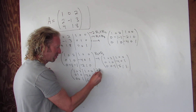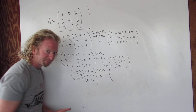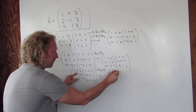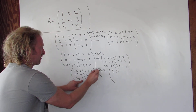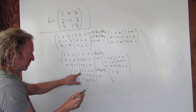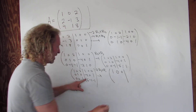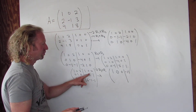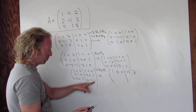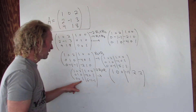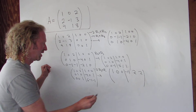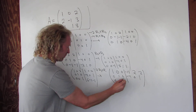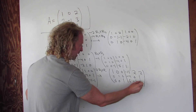We do negative 2 times row 3 plus row 1. Row 1 changes: 0 plus 1 is 1, 0 plus 0 is 0, negative 2 plus 2 is 0 — that was the whole point. Negative 12 plus 1 is negative 11, 2 plus 0 is 2, 2 plus 0 is 2. Everything else stays the same: row 2 is 0, 1, 0, negative 4, 0, 1. Row 3 is 0, 0, 1, 6, negative 1, negative 1. That's the inverse.